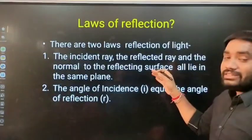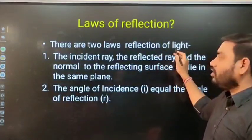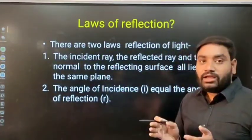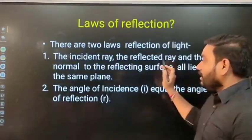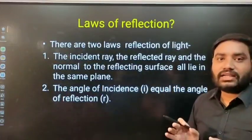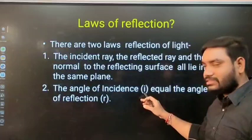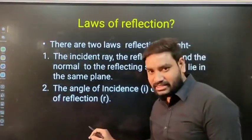What are the rules of reflection? First, there are two laws of reflection of light. First, the incident ray, reflected ray, and the normal ray to the reflecting surface, all are in the same plane. Second, the angle of incidence (I) equals the angle of reflection (R).